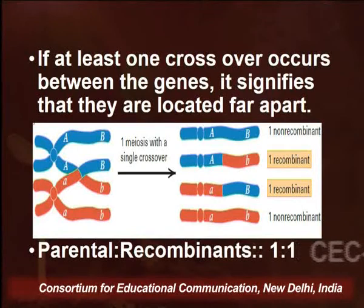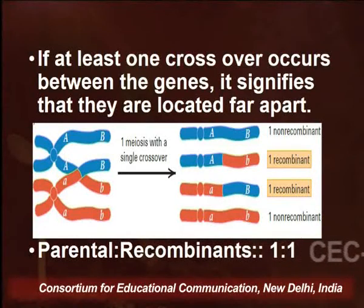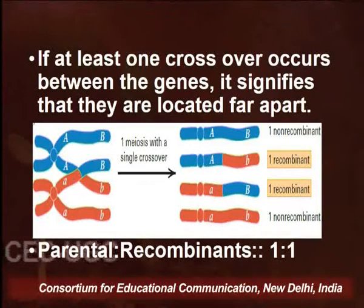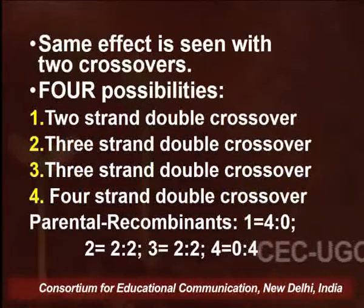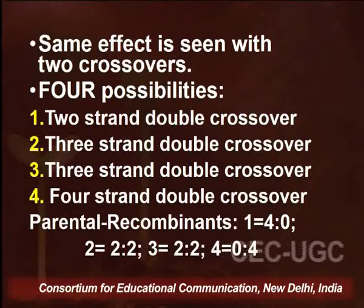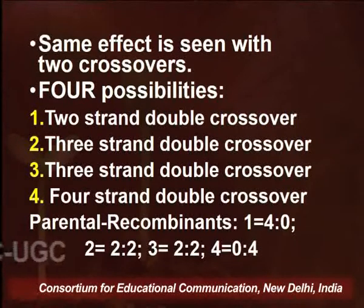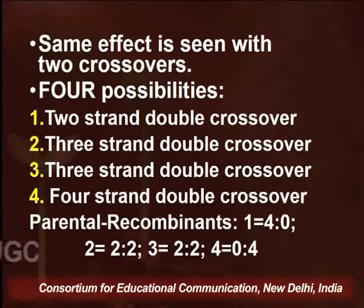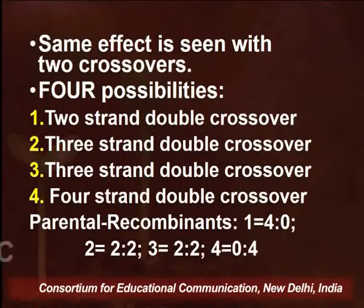If there is just one crossover between genes, one pair of recombinants is formed and one pair remains parental — so parental to recombinants is 1:1. But with two crossovers, there are four possibilities: a 2-strand double crossover, a 3-strand double crossover (two types), or a 4-strand double crossover. In all cases, the ratio of parental to recombinants varies from 4:0 to 0:4.